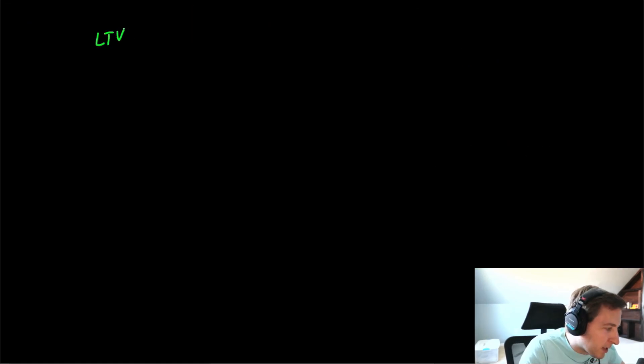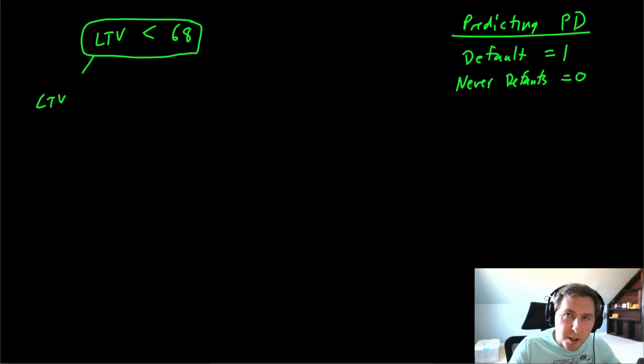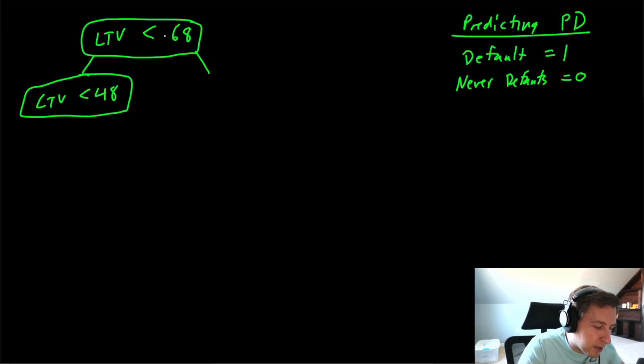Let me do a decision tree and I'll explain how this works and why the tree fails in certain situations. We have this LTV. We're going to say it's less than, let's say, 68. Then we have LTV again. We are going to be predicting PD, which is probability of default. If a customer defaults on a loan, it equals one. If they never default, that's going to be equal to zero. We're trying to predict the probability someone's going to default given their risk, which risk is judged by LTV. We're going to say LTV is less than 48, and then we have a split over here, so LTV is greater than 68 but also LTV is less than 77.